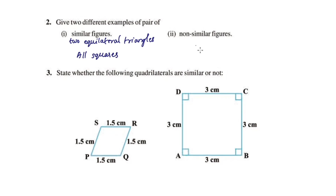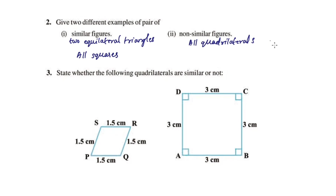For non-similar figures: all quadrilaterals are non-similar figures. For example, a rectangle and a trapezoid — these two are non-similar figures.